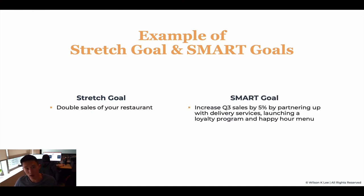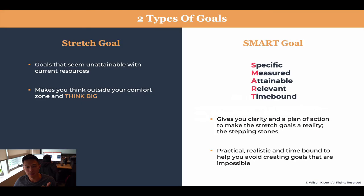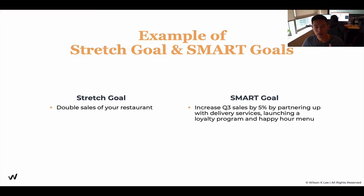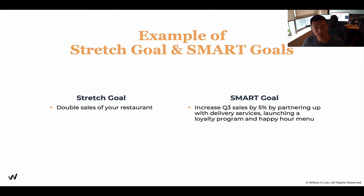For the SMART goal, on the other hand, it is specific, measurable, attainable, relevant, and time bound. For example: increase quarterly sales by 5%. How are we going to get there? By partnering up with delivery services, launching a loyalty program, and a happy hour menu. This provides a timely response with measurable goals, so you can say to yourself whether you have achieved it or not.